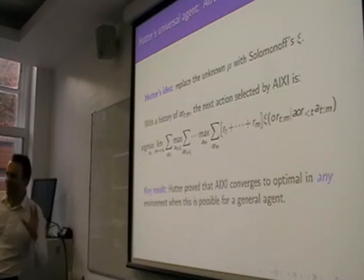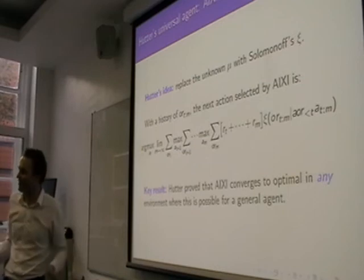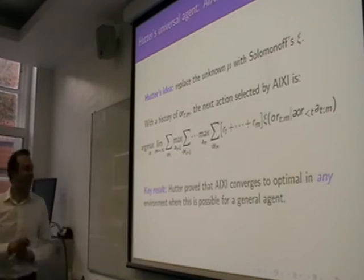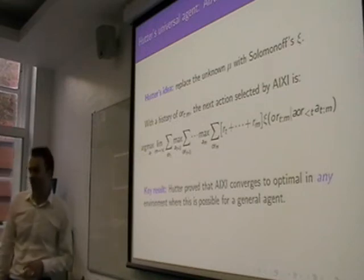If you manage to bear with me, that's the basic model of general superintelligence, ignoring computational cost. And you can prove that it converges to optimal behaviour in any environment where this is possible for a general agent. And there are some environments where it isn't possible.